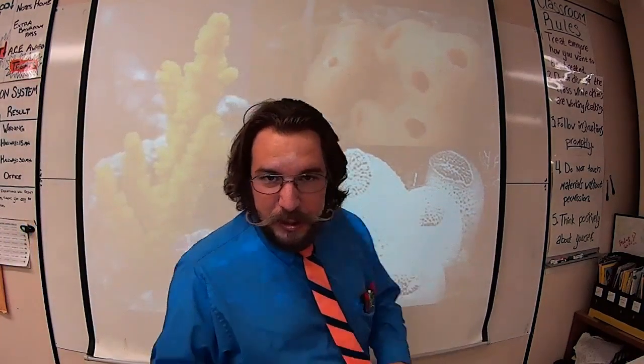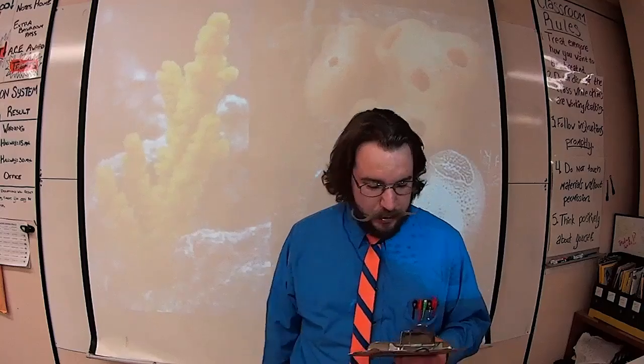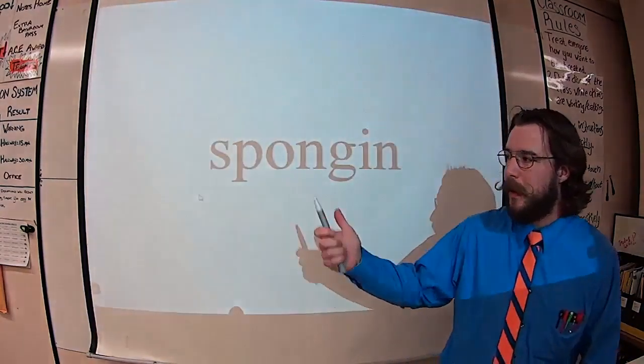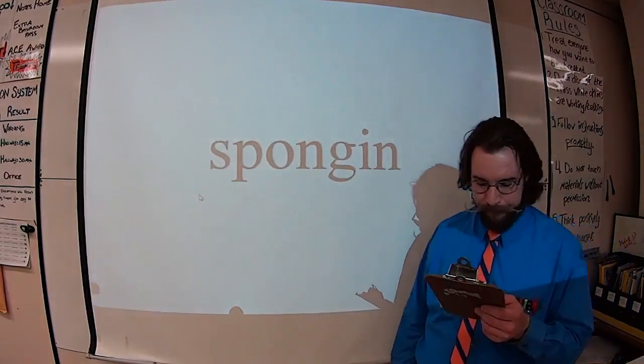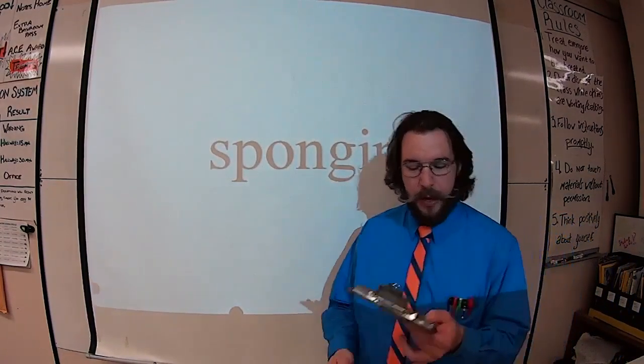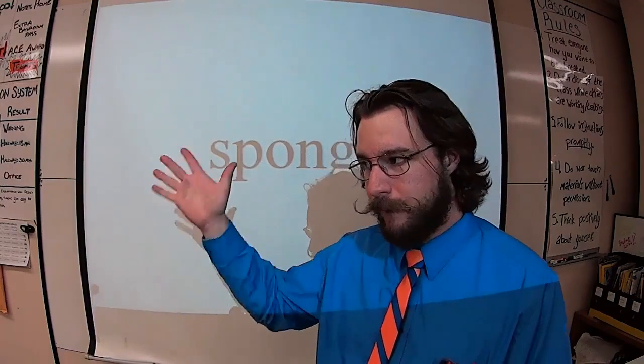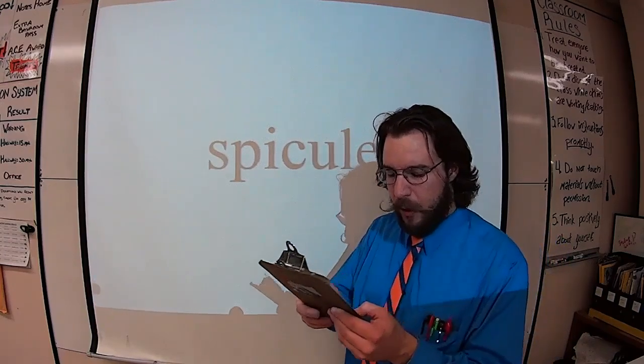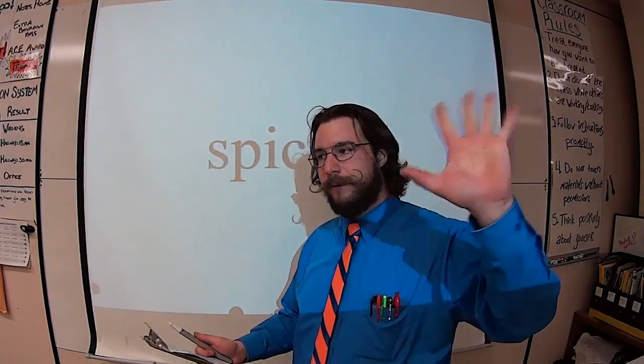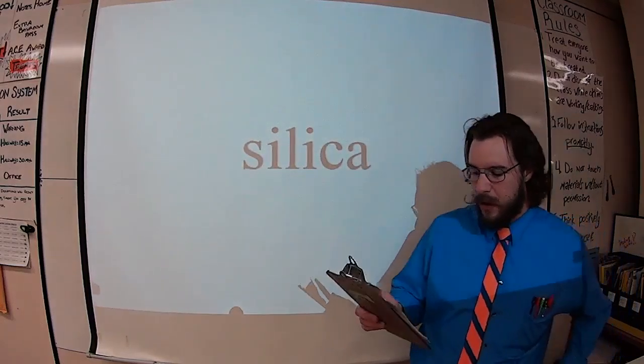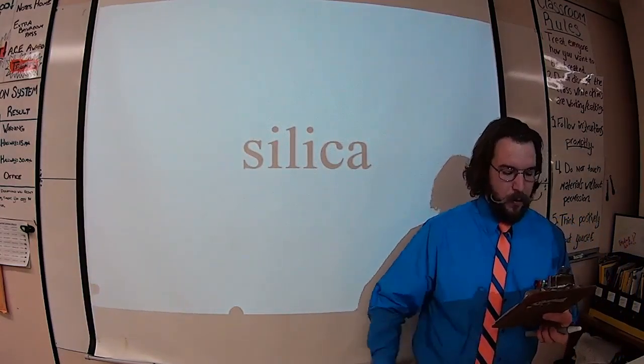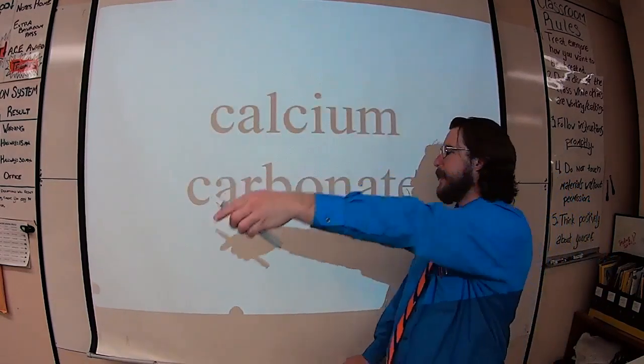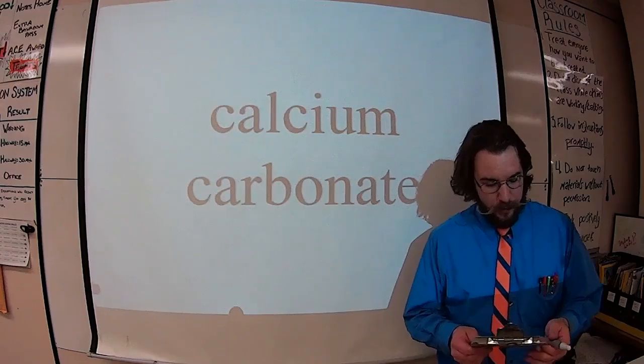Sponges have a very interesting skeleton made out of an imaginative material called spongein. Some have stronger skeletons made of spicules. These spicules are composed mostly of silica. Or sometimes they are composed of calcium carbonate.